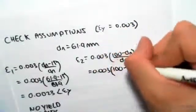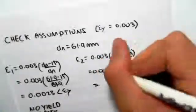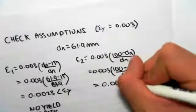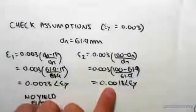Substituting in for dn, 61.9 and 61.9. And solving for this, we would get 0.0018, which you can see is less than our yield strain. So that's also making sense, which is good.